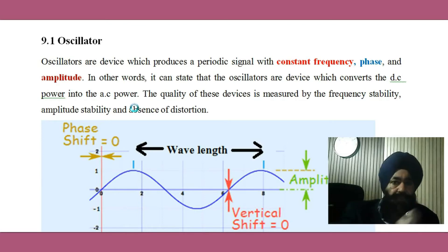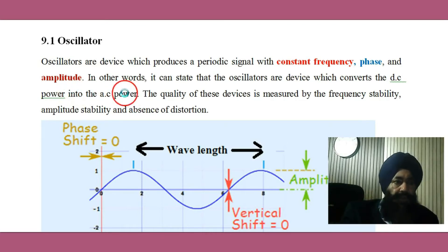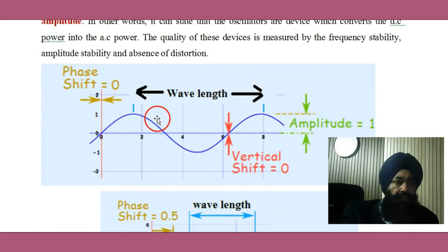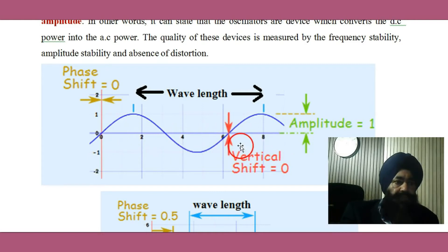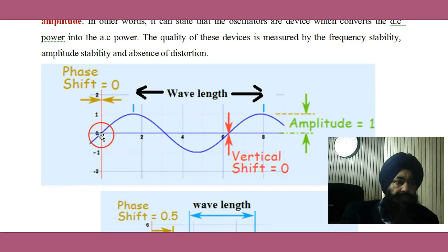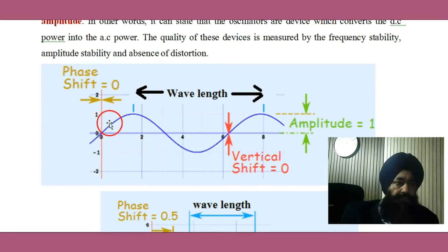They use DC power and produce AC signals, like a sinusoidal signal having some amplitude. The zero level is at the mid, meaning the vertical shift is zero. The amplitude is one unit, and because the starting origin of the wave is at the origin of the coordinate system, the phase shift equals zero.